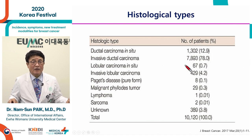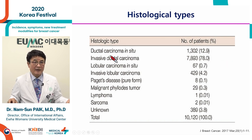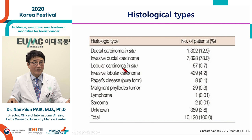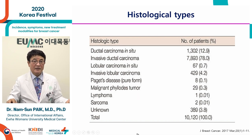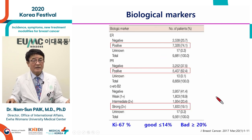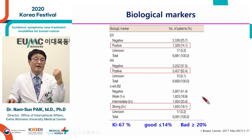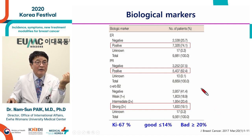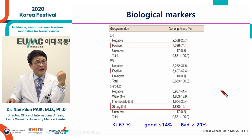This is the same for Caucasians and Asians. The most common histologic type is invasive ductal carcinoma, followed by ductal carcinoma in situ (stage 0), and rarely lobular carcinoma in situ, and very rarely malignant phyllodes tumor or Paget's disease.